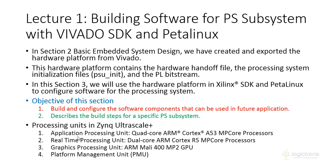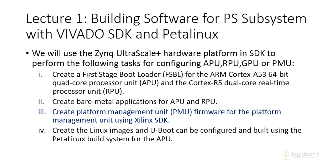The output of this section will be the First Stage Bootloader, bare metal application, and Linux images. There are different processing subsystems inside the Zynq UltraScale+ MPSoC: APU, RPU, GPU, and PMU. We can have multiple types of software — the First Stage Bootloader, bare metal applications, Platform Management Unit firmware, Linux images, and U-Boot. Linux images and U-Boot can be generated from PetaLinux, which requires a Linux operating system. All sections are tested on Vivado 2017.4 and the same SDK version in a Windows environment.